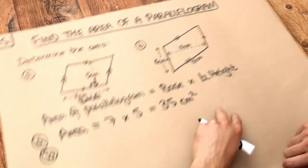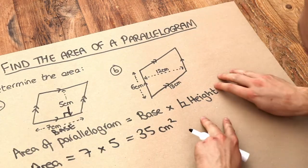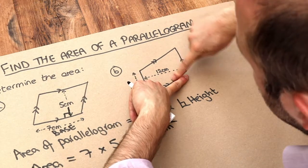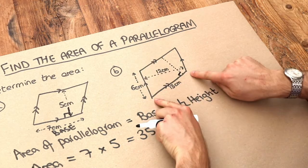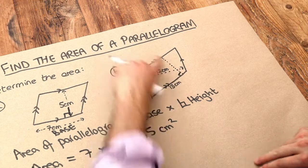Now the second one is a bit more complicated. Should we use the 13 as a base? Well the problem is, if we want to use the 13 as a base, we would have to know the height perpendicular to it. So we would have to find this height at right angles to that base. So that's probably not the best choice of base, because we don't know what that length is.